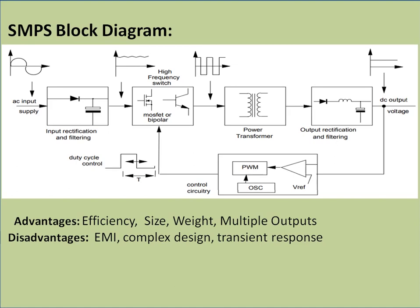Whenever there is a decrease in the output, the control circuit increases the duty cycle of the switching element. Increasing the duty cycle means increasing the on-duration of the switching element. If the output voltage is high, the control circuit decreases the duty cycle, reducing the on-time of the switching element.